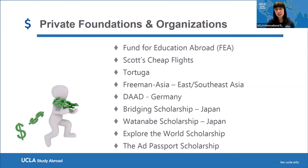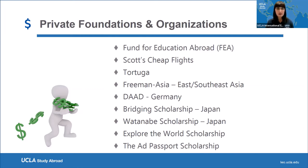The DAD Foundation is primarily aimed at graduate or doctoral students, but they do have a couple of scholarships for undergraduate students for internships or summer programs in Germany. The Bridging Scholarship and Watanabe Scholarship are both for study in Japan, with a minimum duration of one semester or academic year — summer-only is not eligible. The Explore the World Scholarship awards about $2,000 and the program must include an educational or service component. The Ad Passport Scholarship is meant to cover your airline ticket and also requires a semester or year-long program. Rotary Clubs also offer many scholarships.